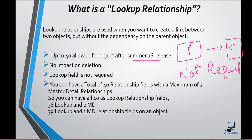You can have 40 as lookup relationship fields, or you can create 38 lookup relationships and then two master-detail relationships, or you can create up to 39 lookup relationships and one master-detail relationship. So the total number of relationships you can have is 40, which includes lookup as well as master-detail.